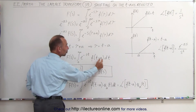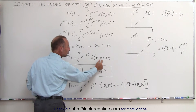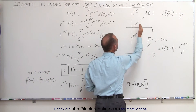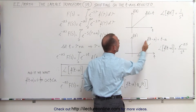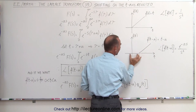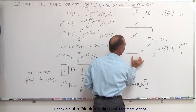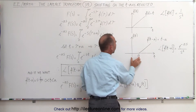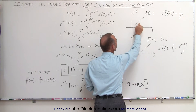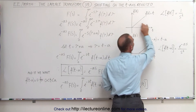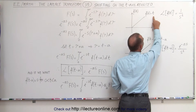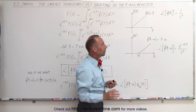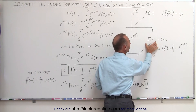Now t minus a means there's been a shift of value a on the function. For example, if this is the function f of t equals t, then here's the function f of t minus a equals t minus a — it simply shifts the function to the right by the value of a. So what happens when you take the Laplace transform of this function instead? We know the Laplace transform of f of t, if f of t equals t, is simply one over s squared. But what if we take the Laplace transform of f of t minus a?